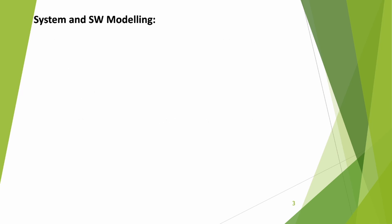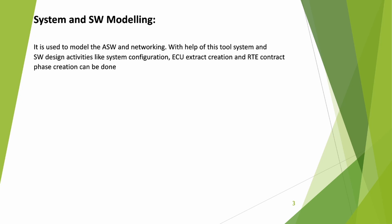Let's look into each type. System and software modeling: this tool is used for activities like configuring the system, creating the ECU extract, and in the RTE contract phase. On the OEM side, the OEM uses this tool to create software components and interfaces, define the topology, configure the system, and create the ECU extract. On the supplier side, this tool is used to further define software components in detail, add interfaces, and generate RTE headers for developers as part of the RTE contract phase.